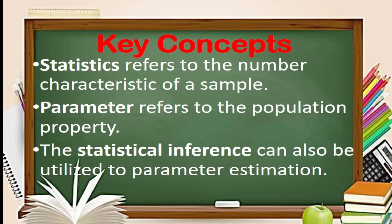A statistic is a number describing a property of a sample, whereas a parameter is a number describing a property of a population. A statistic can be used to estimate the parameter in what is called statistical inference. For example, a researcher examining all marriages in the Philippines in the year 2016 wants to find a particular parameter — the mean age of all of the men in those marriages. From a sample of 1,000 subjects, she obtains a sample mean of 31 years. This figure is a statistic. Using this figure, she concludes that the mean age of Filipino men who married in 2016 is likely to be close to 31 as well.